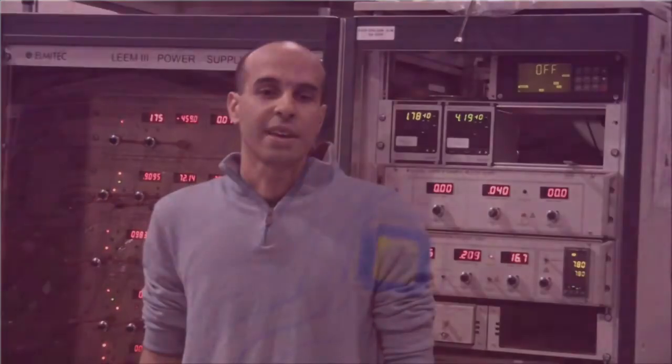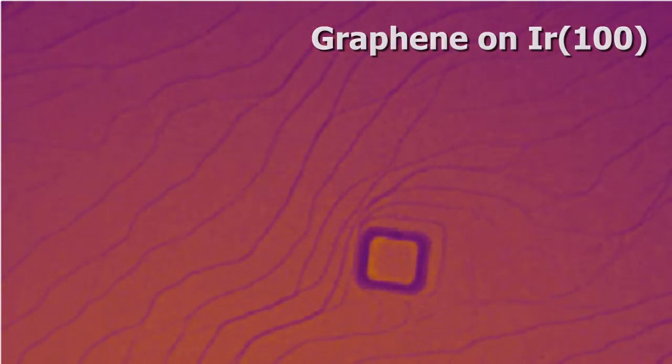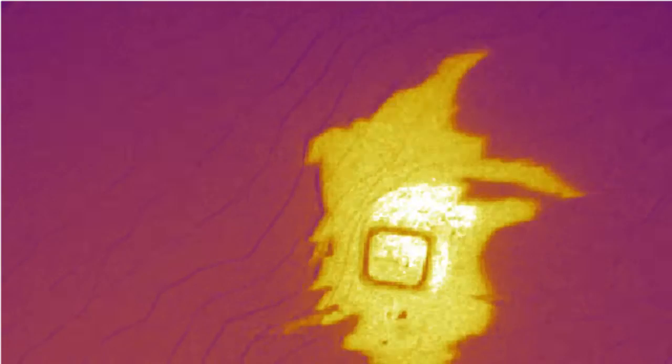SPELEEM is the perfect means to investigate low-dimensional systems, such as ultra-thin films, surfaces, nanostructured surfaces and interfaces and layered systems. A particular example has been graphene. X-PEEM and LEEM have been heavily used to study its electronic and structural properties.